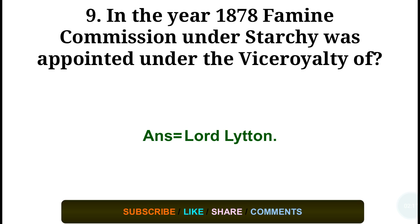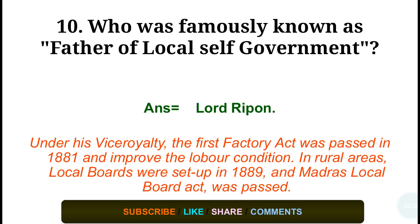Question number nine: In the year 1878, a Famine Commission was appointed. The first Factory Act was passed in 1881 and improved labor conditions. Local boards were set up in 1882, and the Madras Local Board Act was also passed.